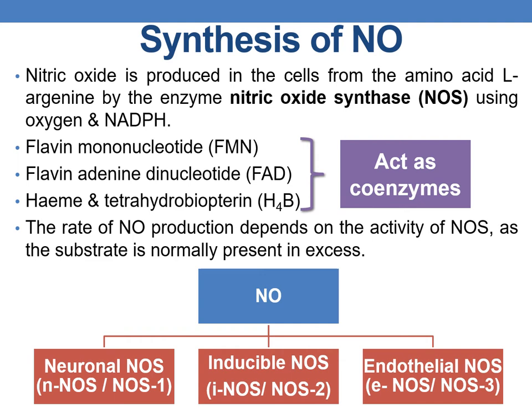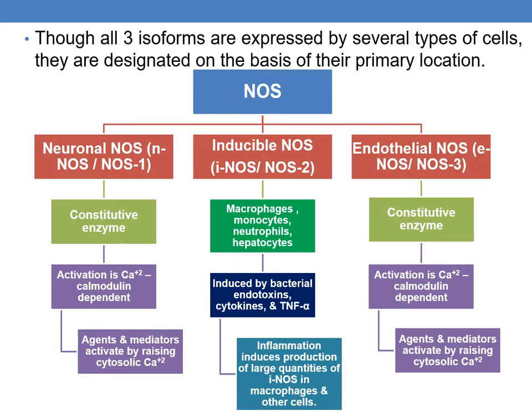Neuronal NOS is also called nNOS or NOS1; inducible NOS is called iNOS or NOS2; and endothelial NOS is called eNOS or NOS3. Though all three isoforms are expressed by several cell types, they are designated based on their primary location: neuronal means present in neurons, inducible means induced by inflammation, and endothelial means mainly released by endothelial cells.